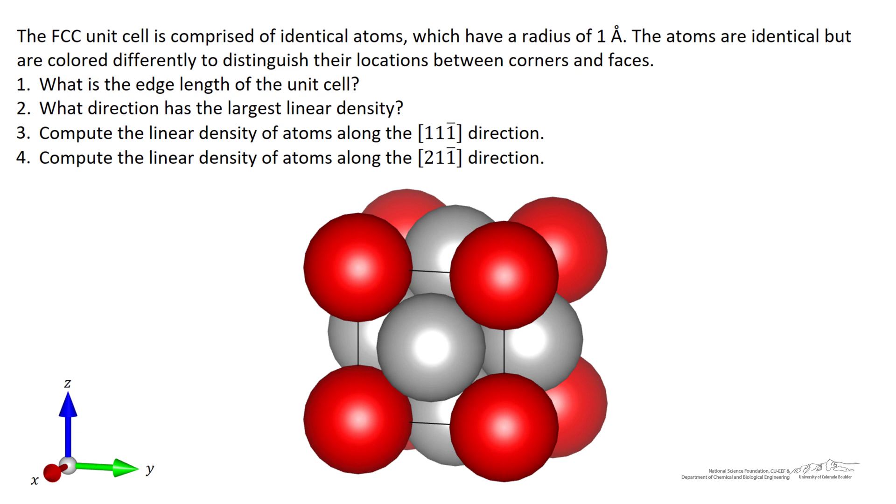Here we've got an FCC unit cell with red atoms on the corners and gray atoms on the faces. All of the atoms are identical except for the colors and they all have a radius of one angstrom.